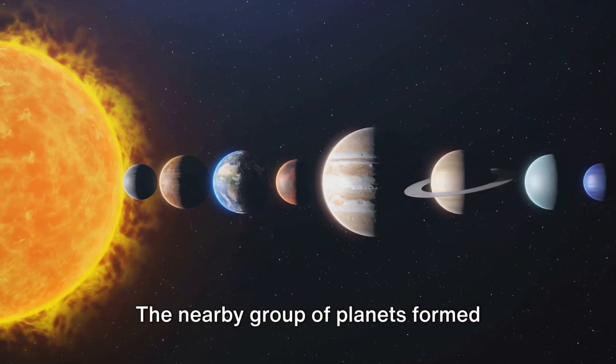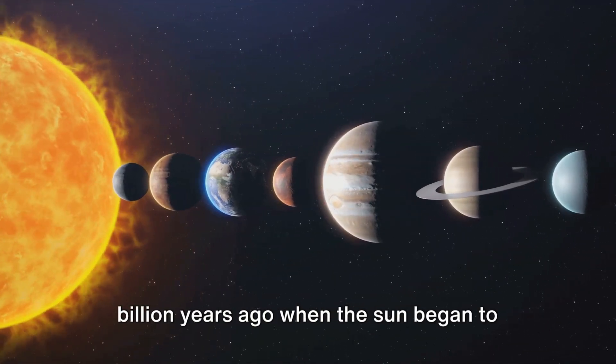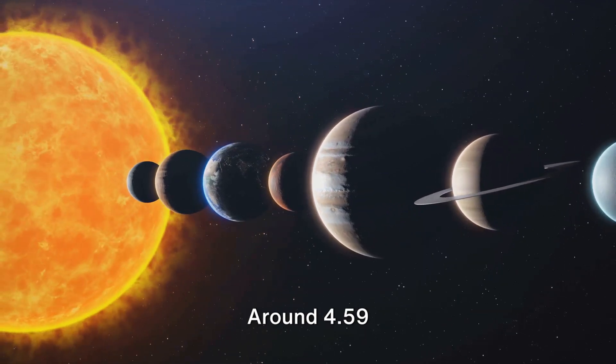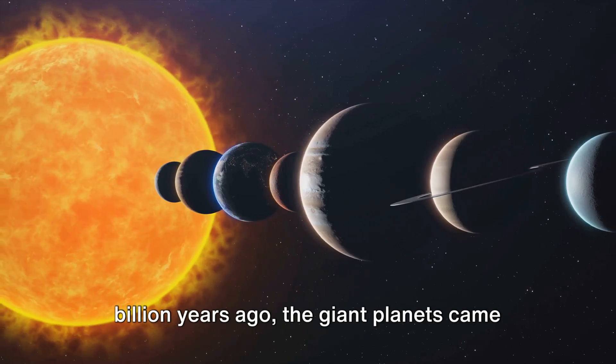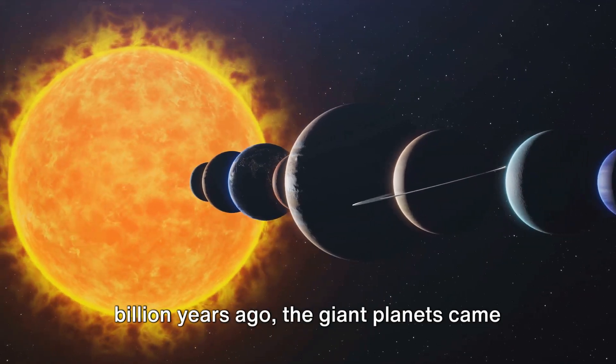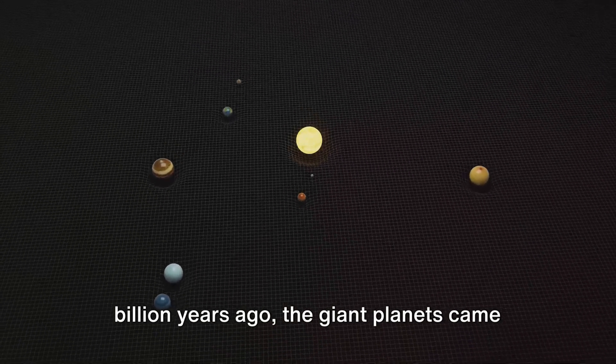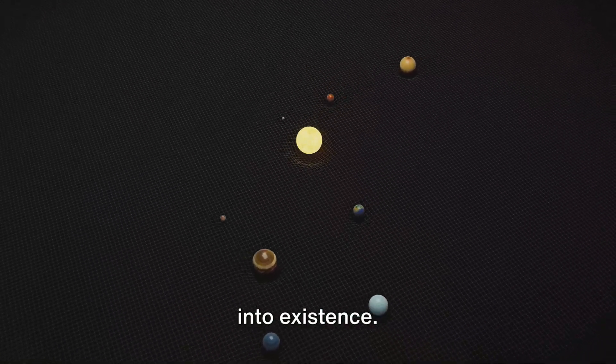The nearby group of planets formed approximately 4.6 billion years ago when the sun began to take shape from a dust storm. Around 4.59 billion years ago the giant planets Jupiter, Saturn, Uranus and Neptune were created, while the smaller rocky planets Mercury, Venus, Earth and Mars came into existence.